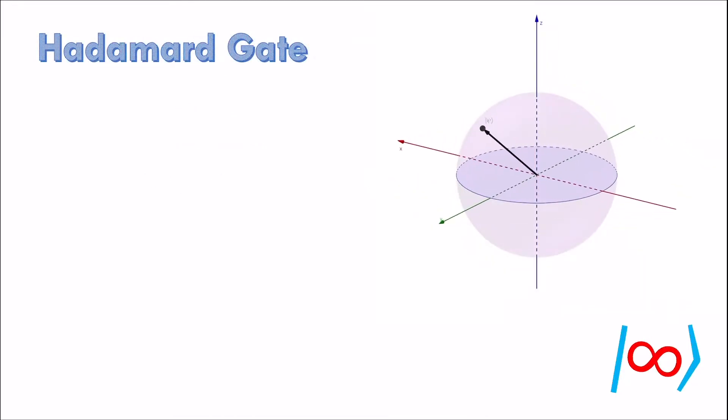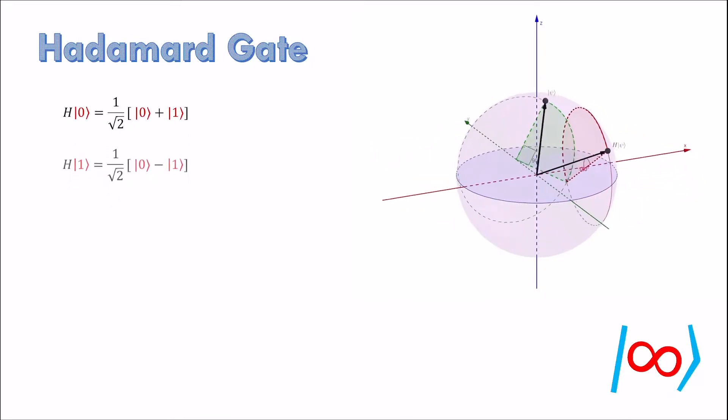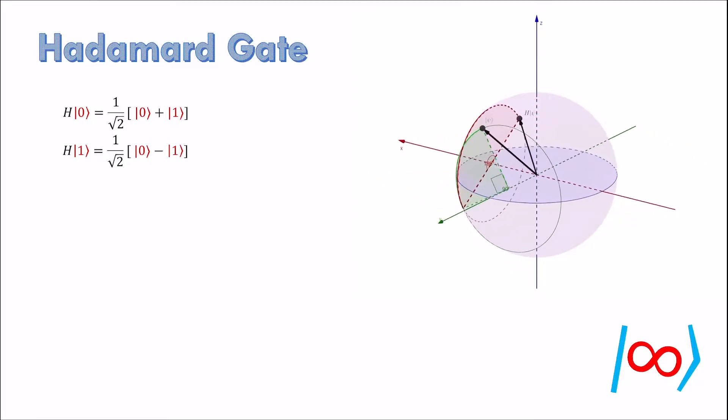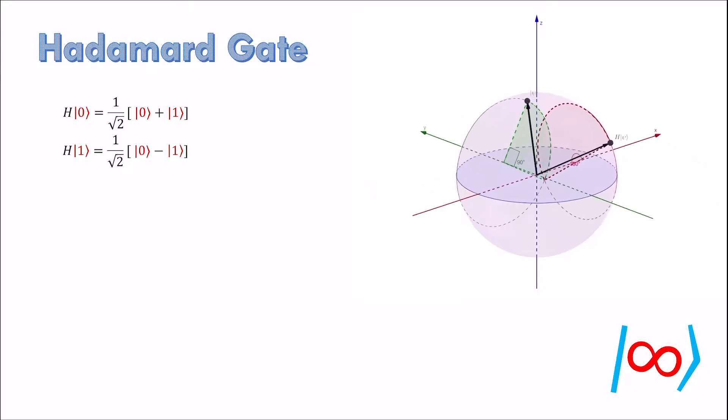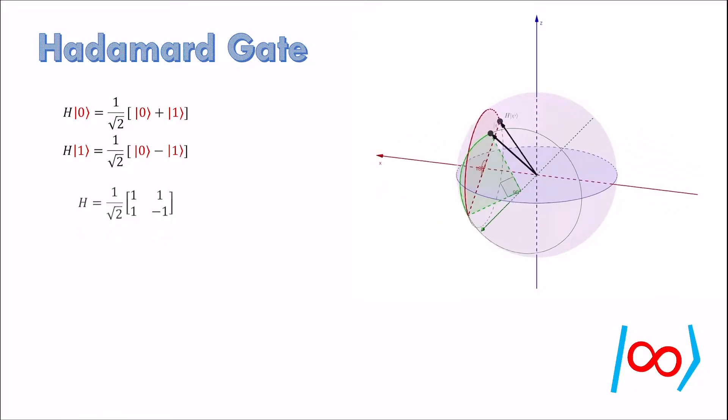Another gate that is ubiquitous in quantum algorithms is the Hadamard gate. Its primary use is to create uniform superposition of computational basis. Hadamard gate converts 0 into 0 plus 1 and 1 into 0 minus 1. On the Bloch sphere, it can be decomposed into two rotations: first apply rotation about the y-axis by 90 degree and then apply rotation about the x-axis by 180 degree. I'll talk about Bloch sphere representations in detail in another video.